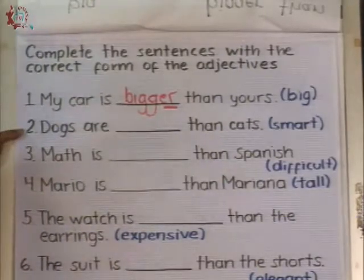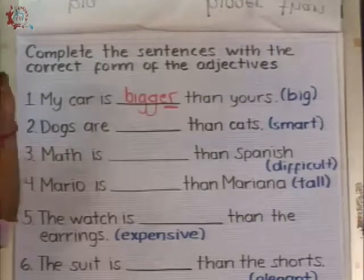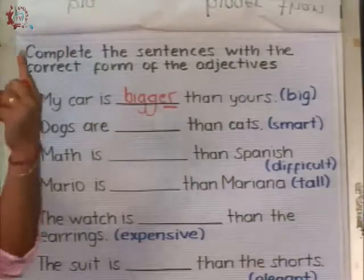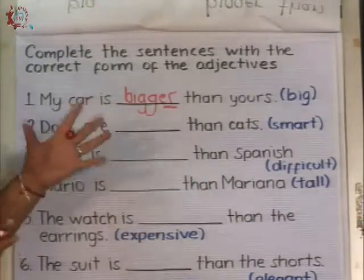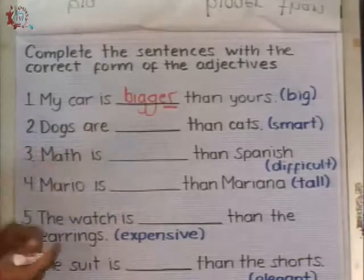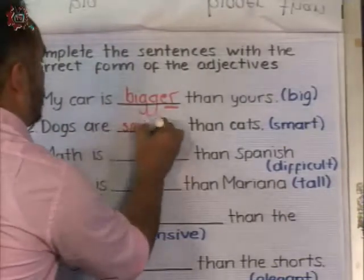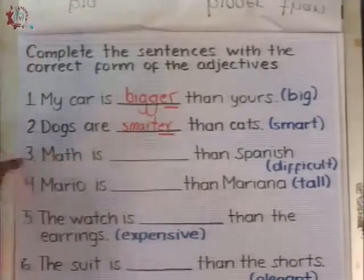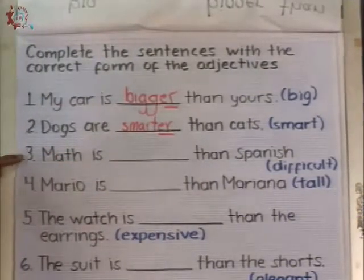Number two: Dogs are ___ than cats — adjective: smart. The sound: smart — just one sound, solo un sonido. Entonces, adjetivo corto. We need to add the -ER ending: smarter. That's right. Dogs are smarter than cats. I like dogs. I don't like cats.